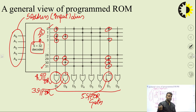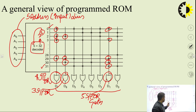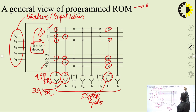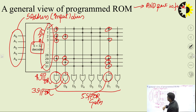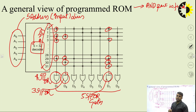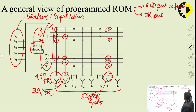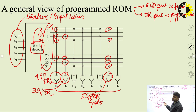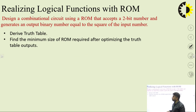To summarize the ROM structure: the AND part is fixed because it is inside the decoder — those 32 outputs are the outputs of 32 fixed AND gates. But the OR gates are externally connected and under the programmer's control — the OR part is programmable. This is an already-programmed ROM example. Now we will program our own ROM as per our requirement.